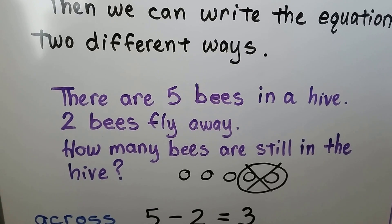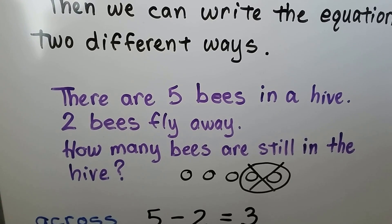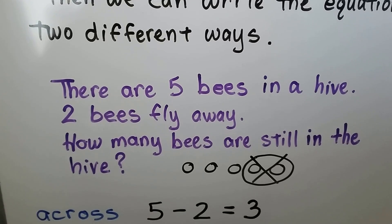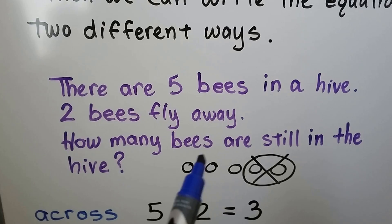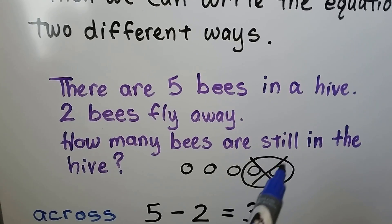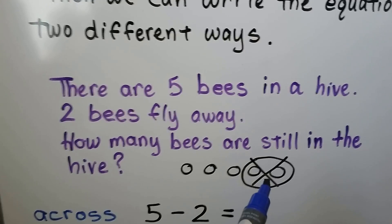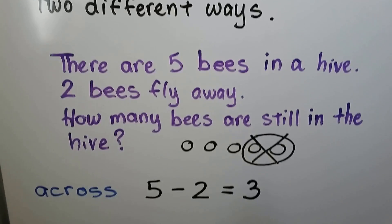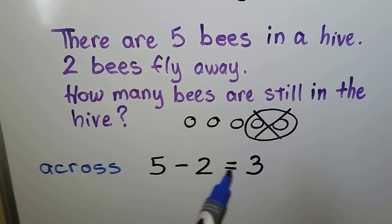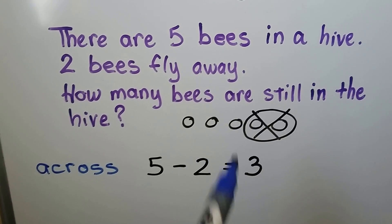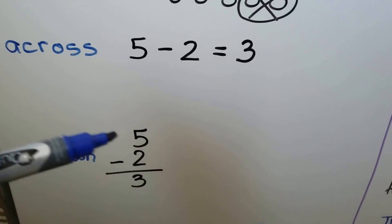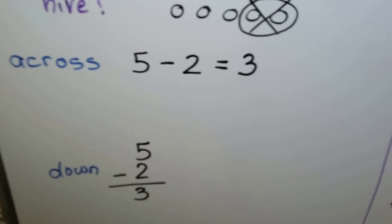There are five bees in a hive. Two bees fly away. How many bees are still in the hive? We can make five circles for the five bees, then draw a circle around and cross out two of them that are flying away. When we write it across: five minus two is equal to three. There are three bees left. We can also write it going down: five minus two is equal to three.